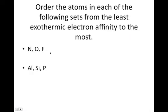So order the following sets of atoms, least exothermic electron affinity to the most. And so least excited is going to be nitrogen in this case. So nitrogen and then oxygen, fluorine, so it was already in order. Aluminum, silicon, phosphorus. Oh, look at that. It's already in order too.